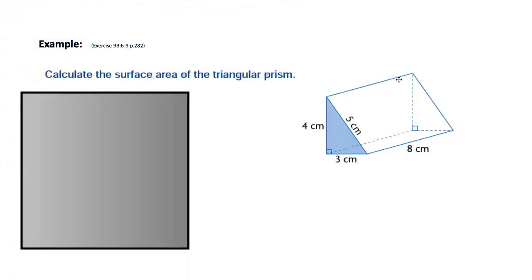When finding the surface area of different types of shapes, in this case a triangular prism, one of the best ways when you first start doing this sort of problem is to try your best to draw the net of the object.